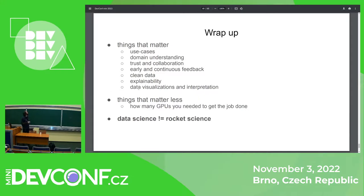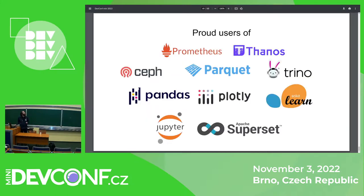One more thing I want to emphasize is trust and collaboration between domain experts and data scientists. We can't just work in isolation, trying out models and hoping they get used. Really working with domain experts, observing what they need, and finding the best solution for them — it's not about using the right model, it's about solving problems for the users. I'll also mention a number of projects we use in our work. If you're interested or have similar problems, I can definitely recommend any of them, and we can talk about it afterwards. That's all I wanted to share today.